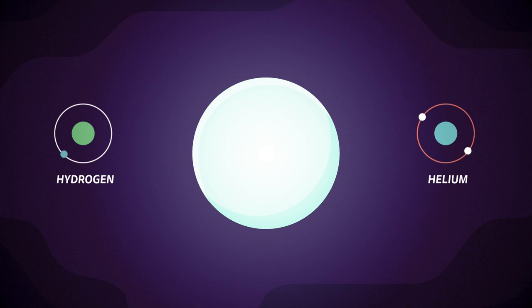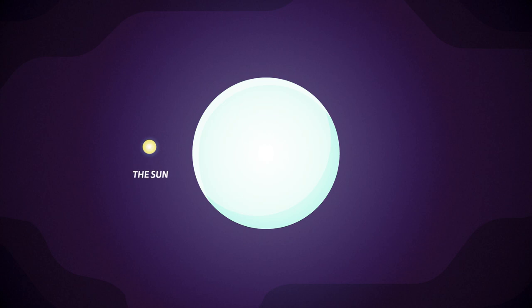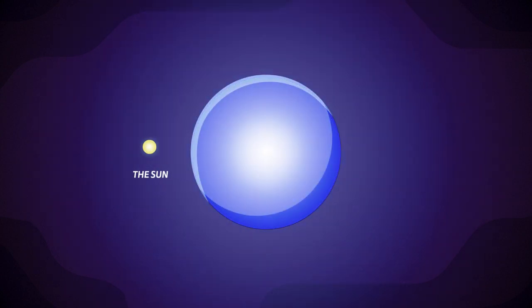This original star type would have been up to 100 times bigger and 20 times hotter than our sun, shining an ultraviolet blue due to the abundance of ultraviolet radiation.